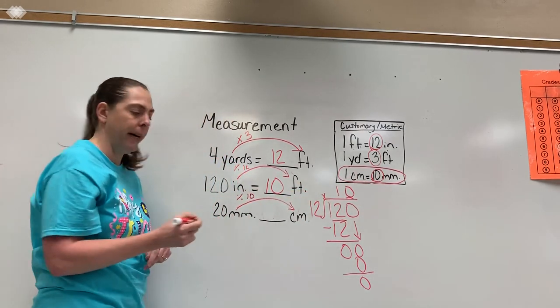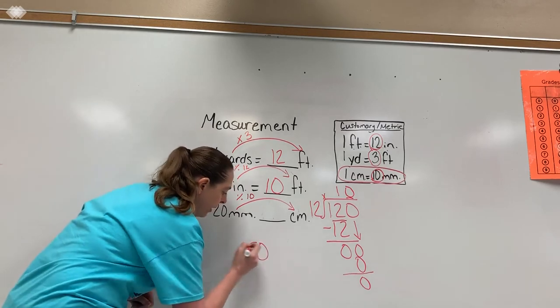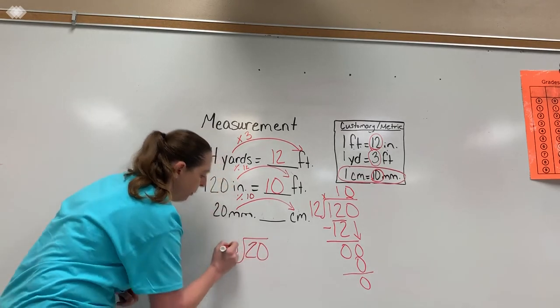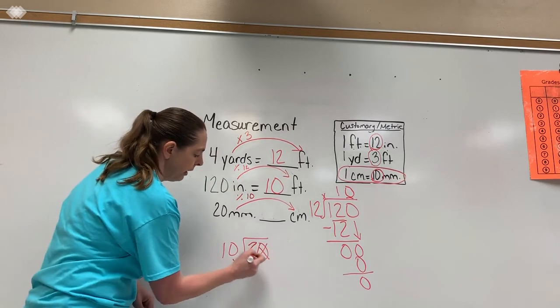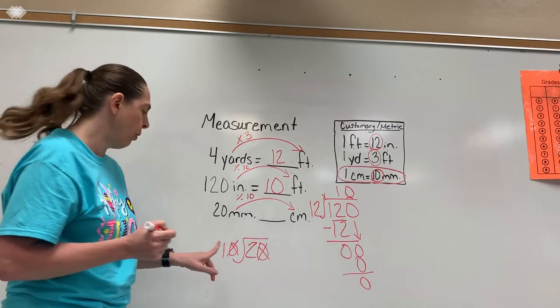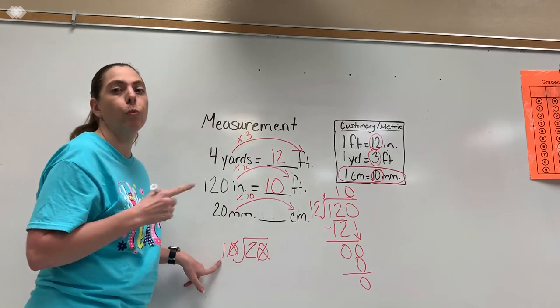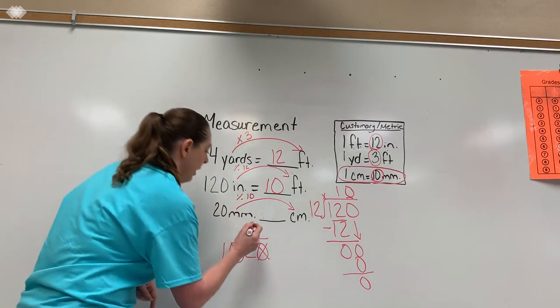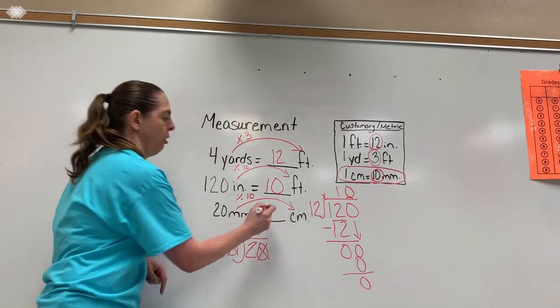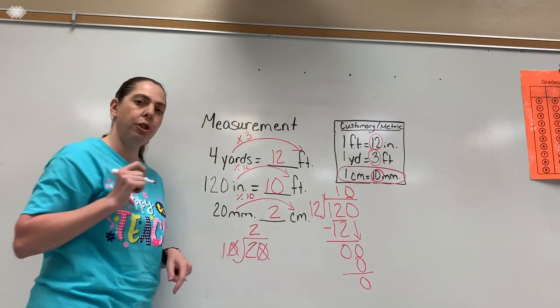So let's take a look. If I divide 20 by 10, I've taught you a little trick when you're dividing with zeros. As long as you have zeros on both ends, you can eliminate one of them. And so now all I have to do is divide one into two. So how many times does one go into two? It goes in two times. So our answer is two.